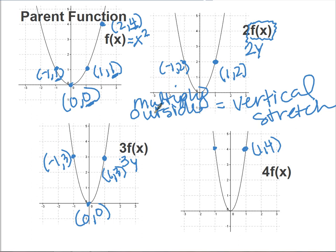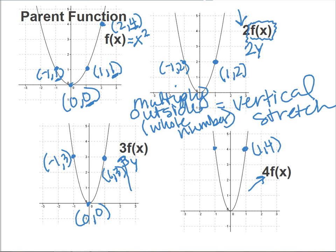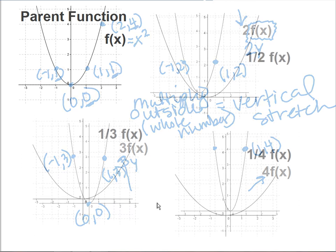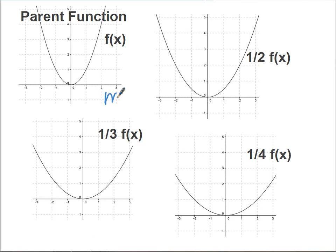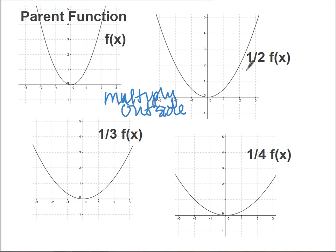So multiplying outside the function by a whole number gives us a vertical stretch. But we need to specify that, because look at the next graphs — we're still multiplying outside the function, but now they're not whole numbers anymore; we're multiplying by fractions.